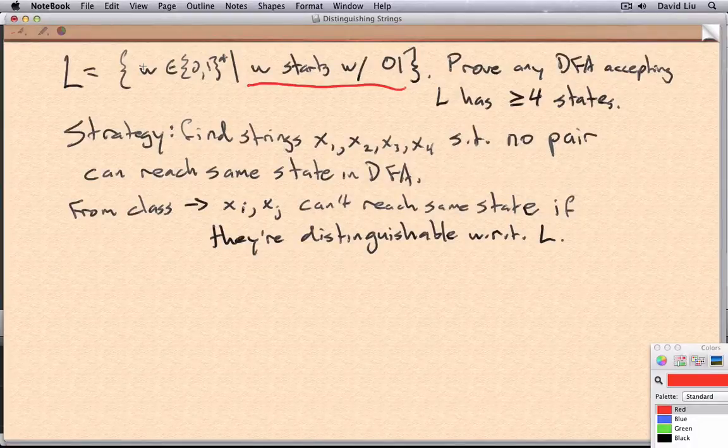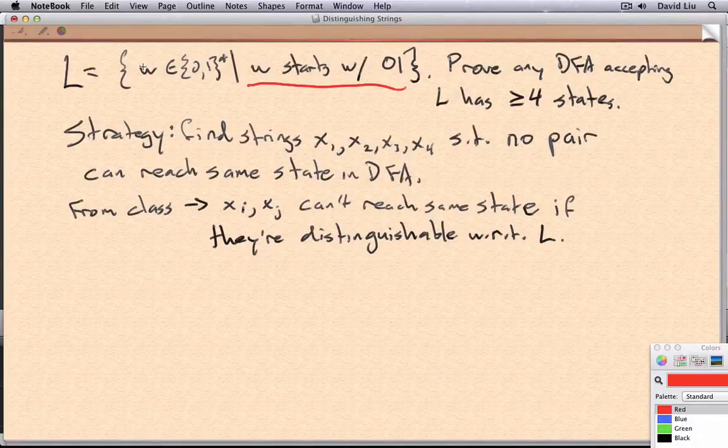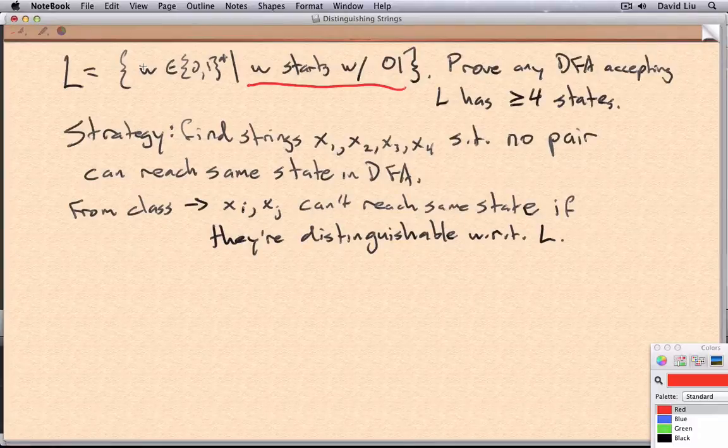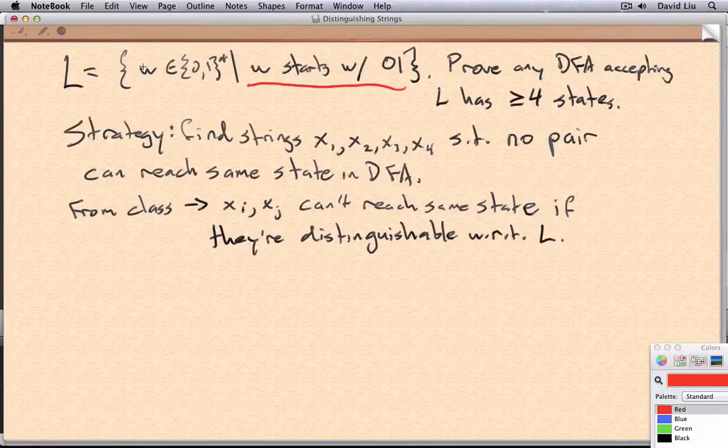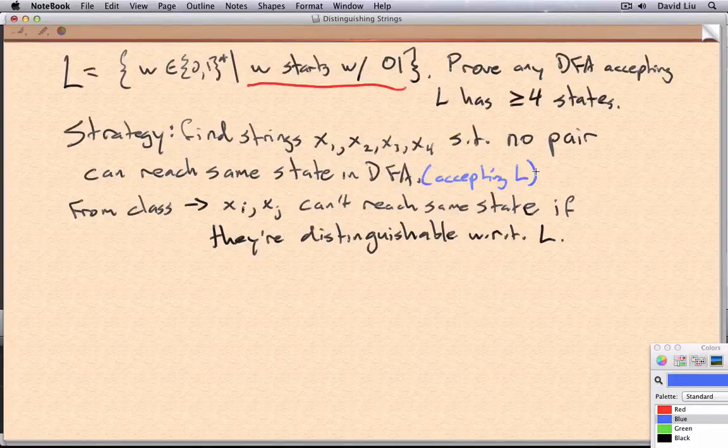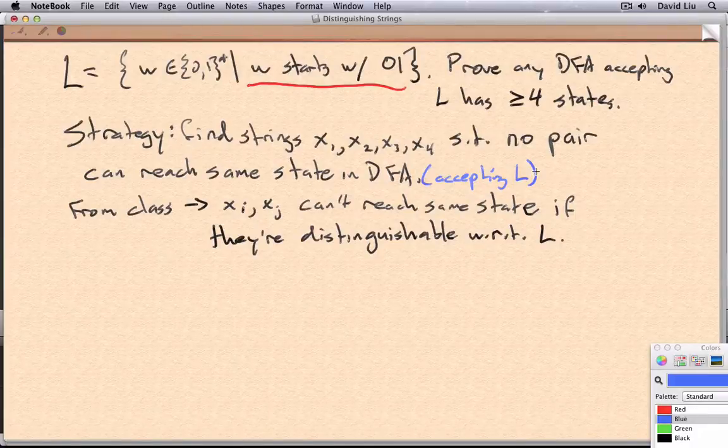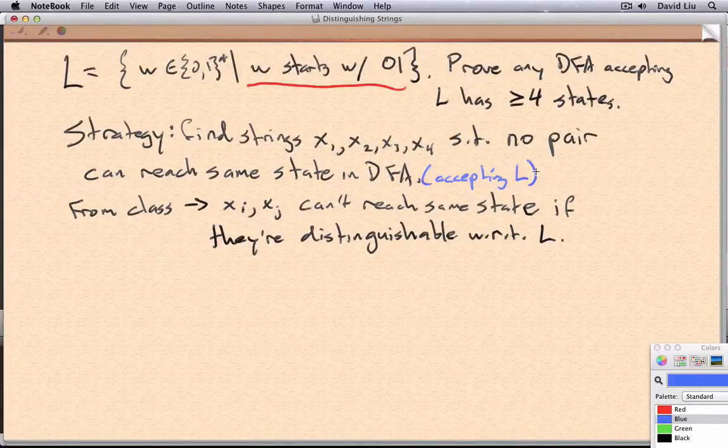And if you remember, this overall strategy was to find four different strings such that no pair could reach the same states in a DFA accepting L. And in class we actually saw the most important part of this. Two strings can't reach the same state in such a DFA if they're distinguishable.